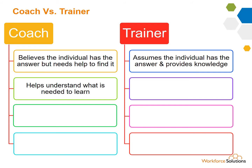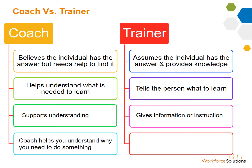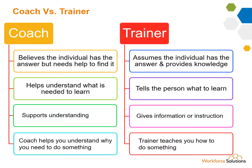A coach helps a person understand what they need to learn, then helps them figure out how to learn it. It may be a variety of approaches to accomplish that, of which training is just one. A trainer tells the individual what to learn. A coach supports an individual in understanding what they may need to learn or do to achieve a desired goal. A trainer gives information or instructions to improve performance or to reach an already defined level of skill or knowledge. A coach helps you understand why you need to do something; a trainer teaches you how to do something.